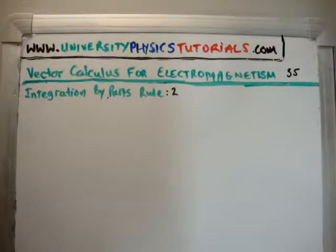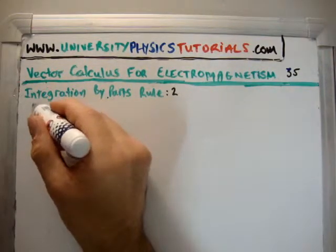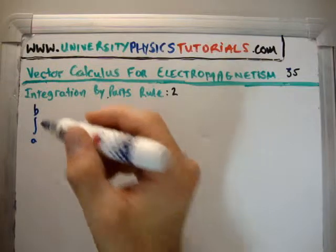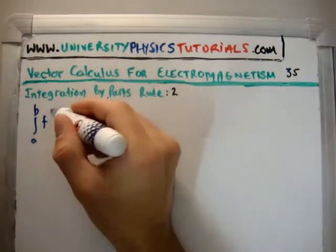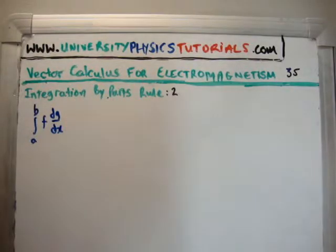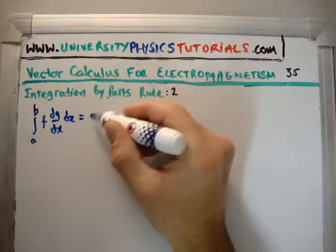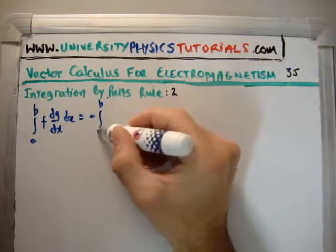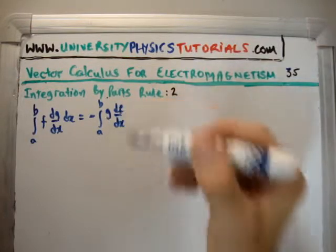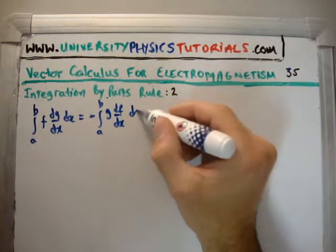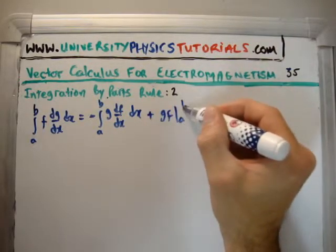So in the video on the proof of integration by parts, we showed you that if we integrate the product of two functions from a to b, the two functions are f and then the derivative of another function g, or dg/dx, and we integrate that dx. Well, what we can do is we can transfer the derivative to the other function, so it becomes df/dx. But what it cost us was a minus sign, and it also costs us a boundary term like that.